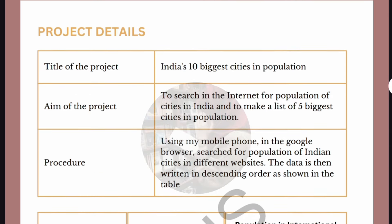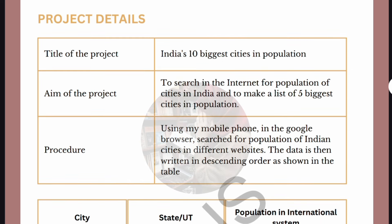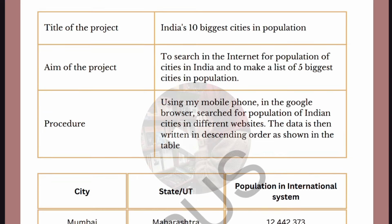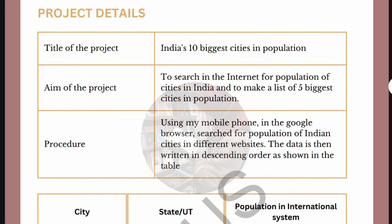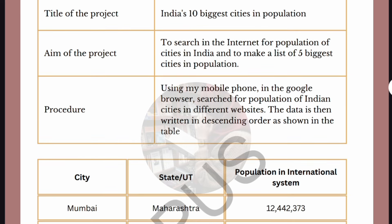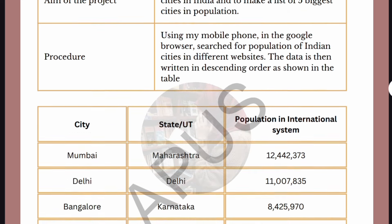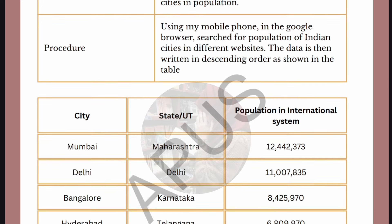Next is project details. The title of the project is 'India's 10 Biggest Cities in Population'. The aim of the project is to search the internet for the population of cities in India and to make a list of the five biggest cities in India by population. Procedure: using a mobile phone, search in Google browser for the population of India's cities from different websites. The data is then written in descending order as shown in the table.